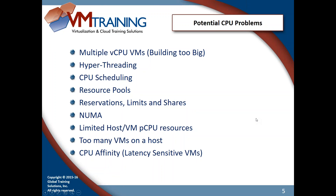When we look at potential things that can cause problems, probably the first and biggest problem we see is people building their VMs too big. You've got a domain controller running DHCP and DNS and they're giving it four virtual CPUs, but when you monitor it, it's using only 100 or 200 MHz of CPU time. Building virtual machines too big can really hurt you.